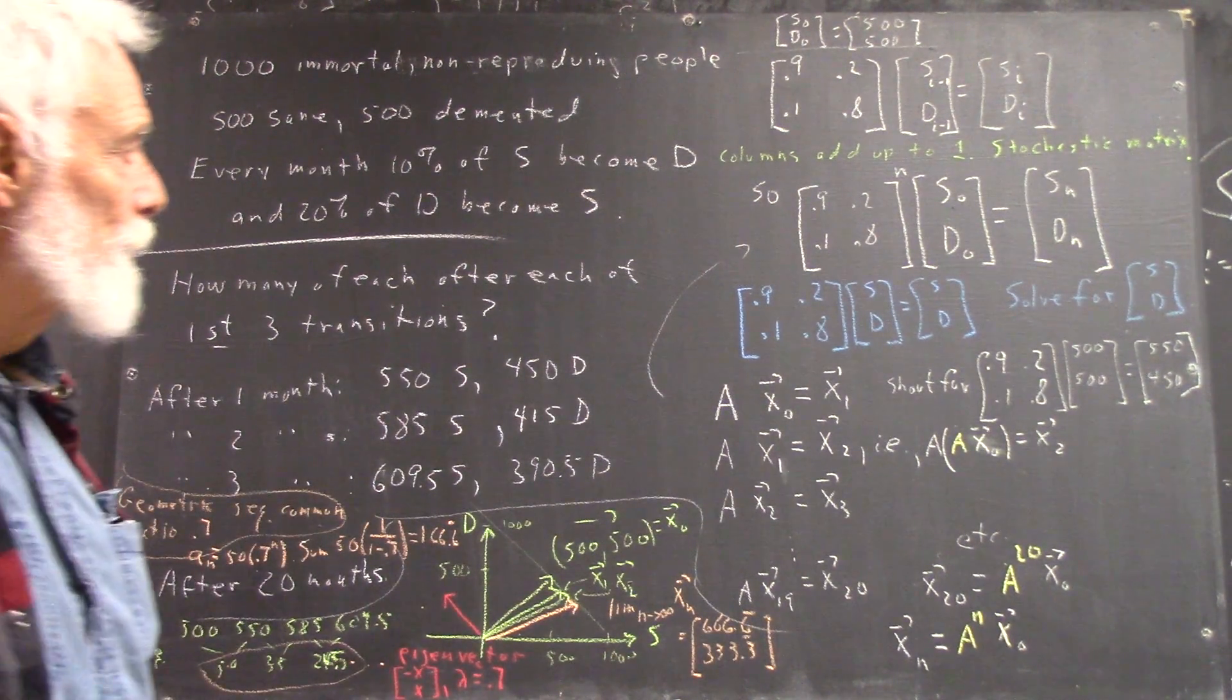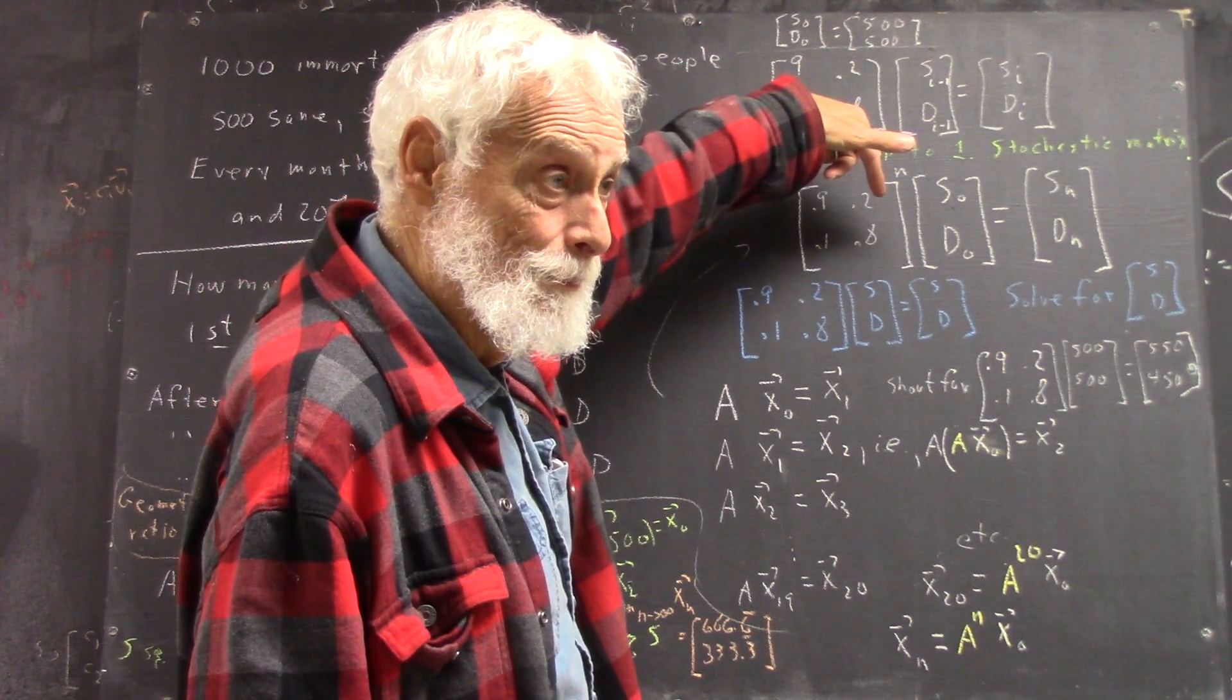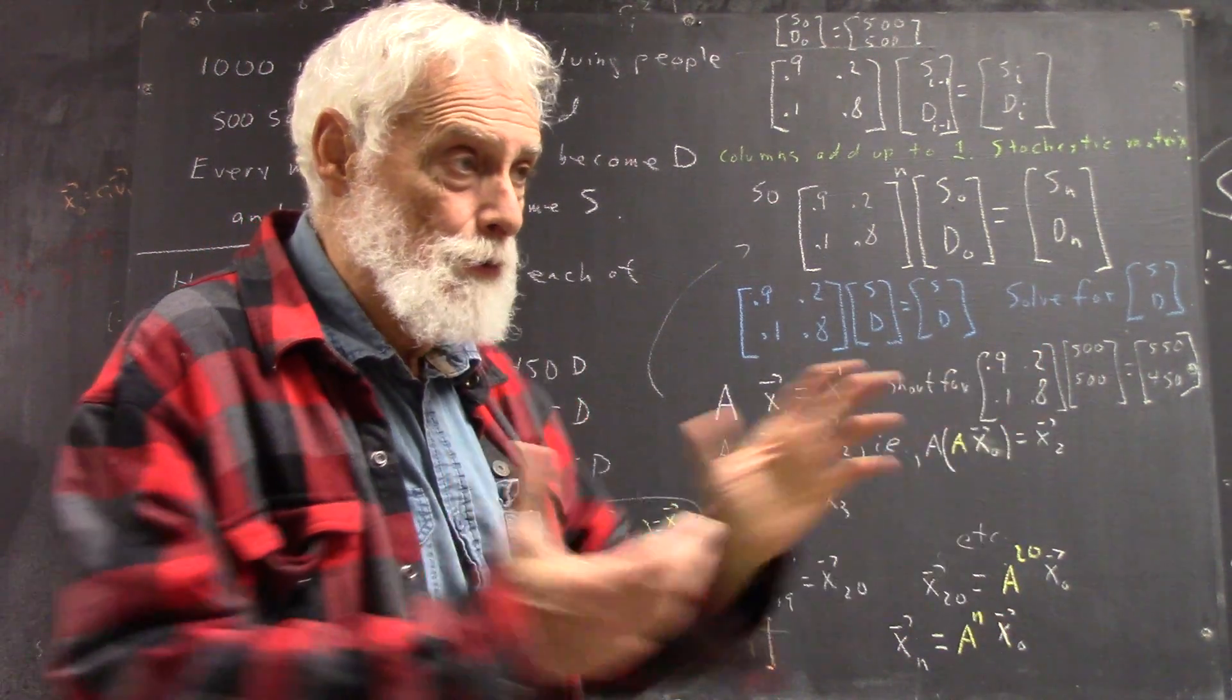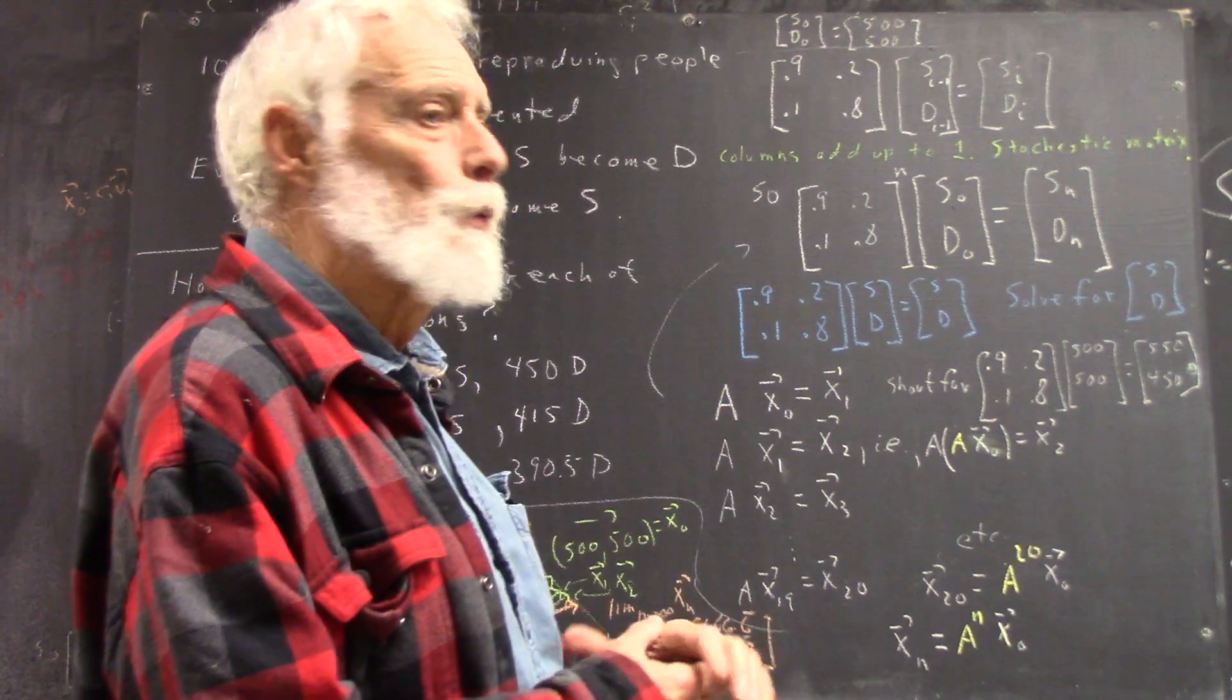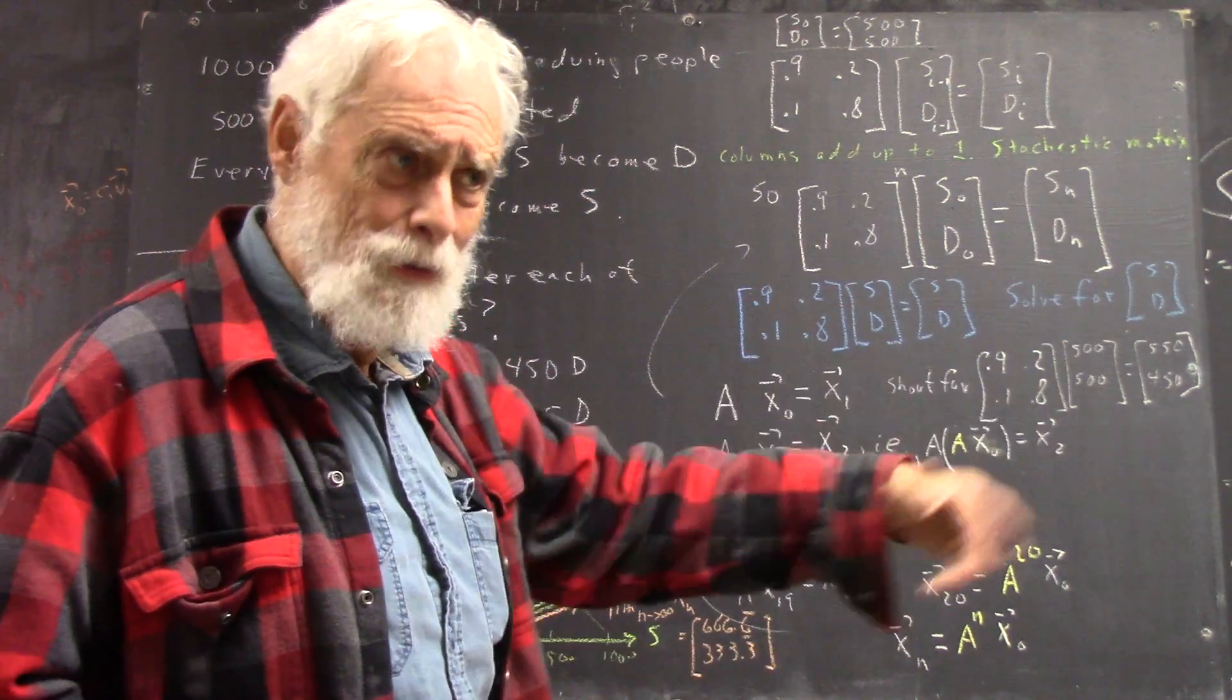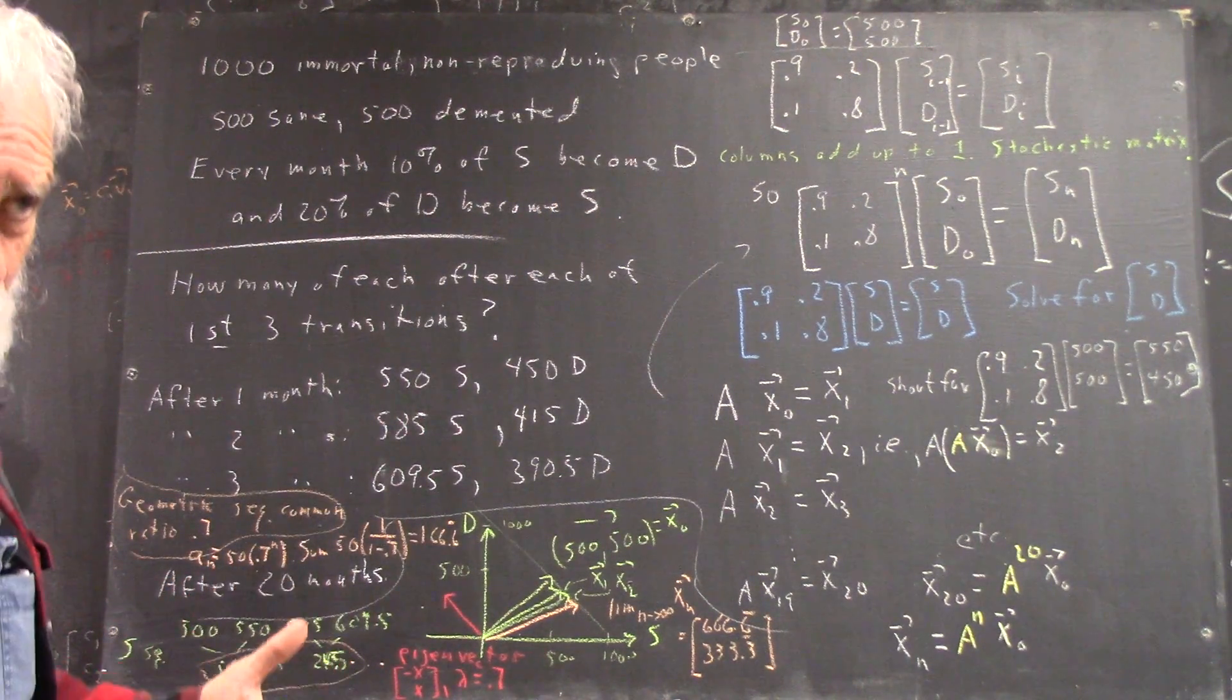A stochastic matrix, remember, has the characteristics that the columns add up to one. So what that does is it doesn't change your total quantity, your total population in this case. You're just transitioning within a given population, okay? And that's the way probabilities work. Your probabilities always have to add to one, so it's kind of a natural thing. And we can't go too deeply into that because we just don't have time.